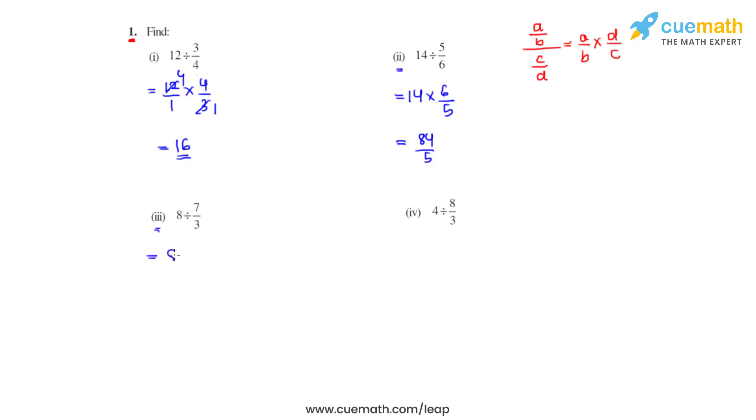Now coming to the third part, we have 8 to be divided by 7 over 3. So the reciprocal of 7 over 3 is 3 over 7, and that gives us the final answer as 24 over 7.